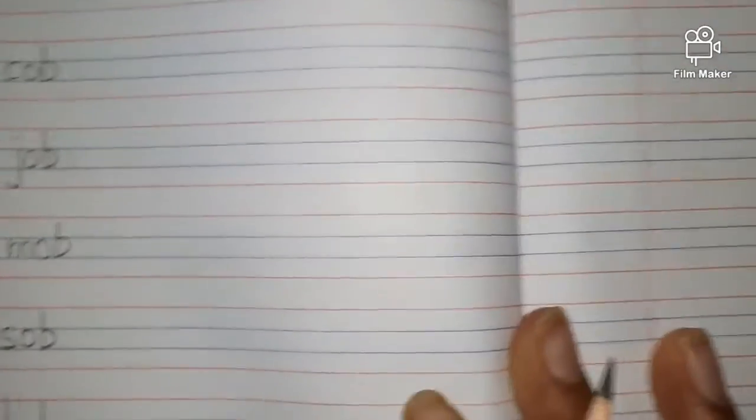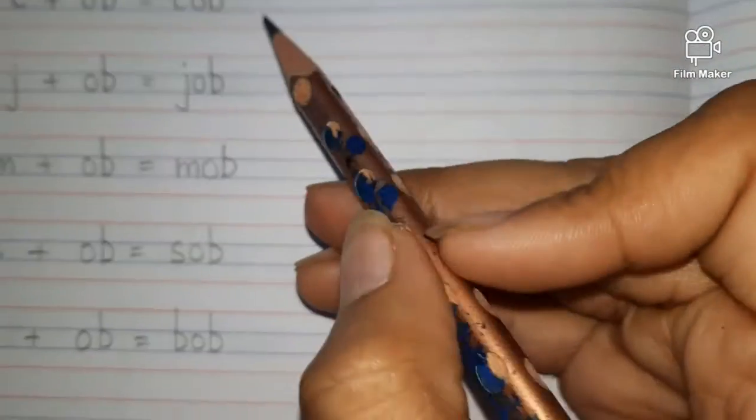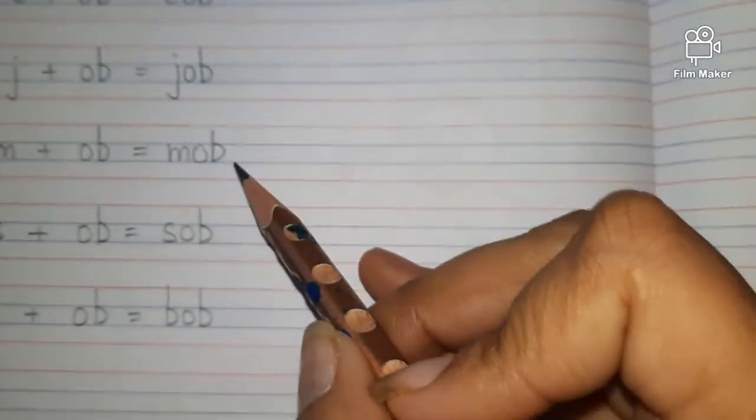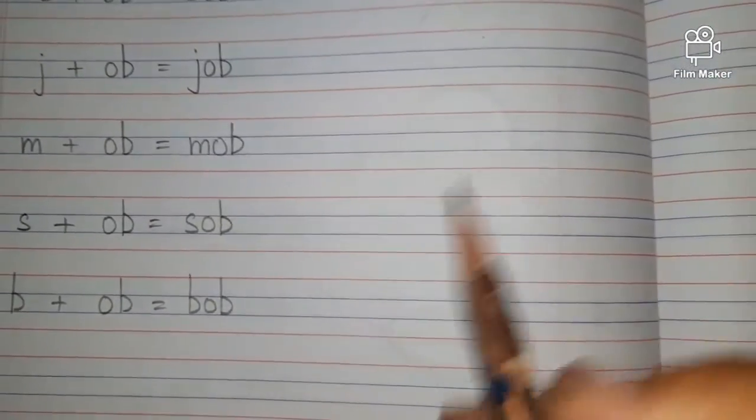So now let's quickly revise what are the OB sound words we have written: COB, JOB, MOB, SOB, and BOB.